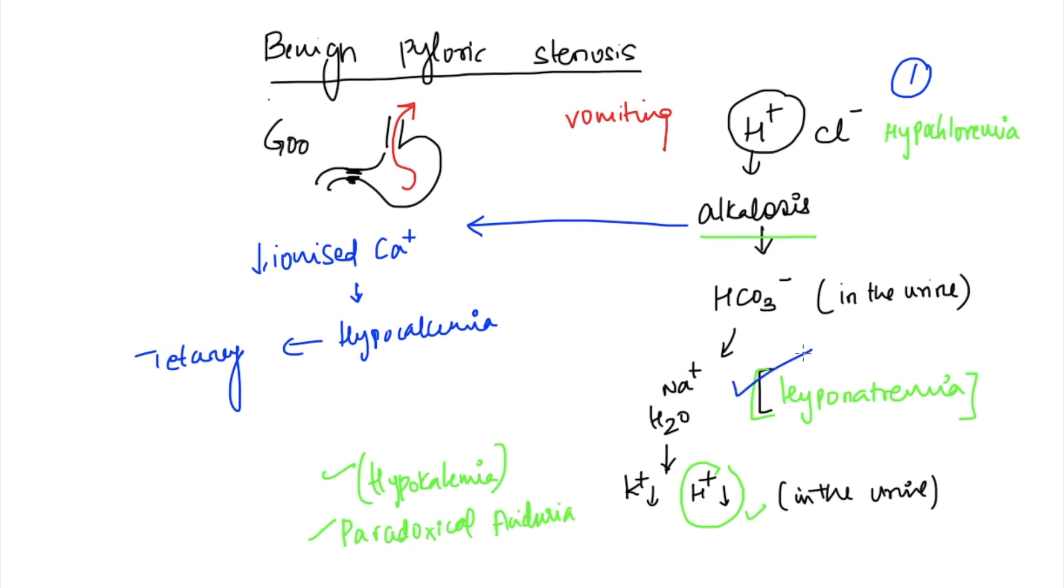You realize it's not good to throw so much sodium, so sodium and water retention will occur. Next step is that in exchange for sodium, you're losing potassium and H+. As a result, you'll have hypokalemia and paradoxical aciduria. One more important thing: in the state of alkalosis there is reduced ionized calcium, so you could have tetany as well.